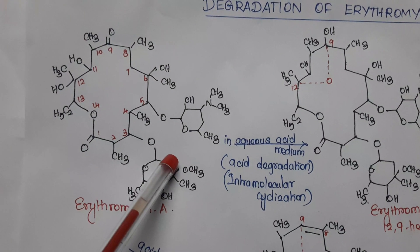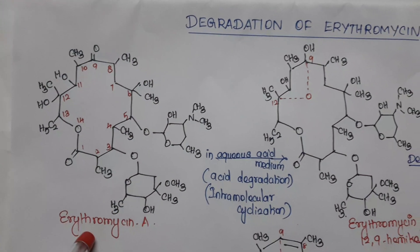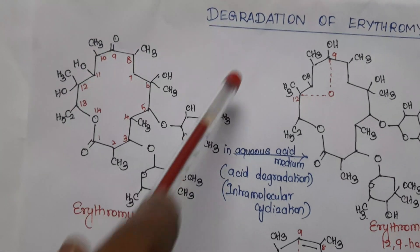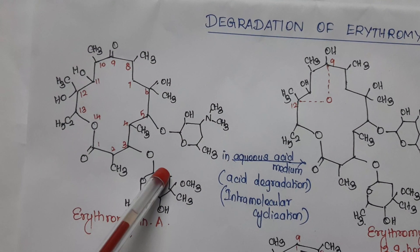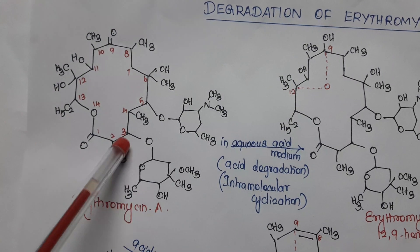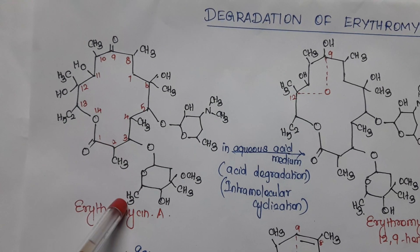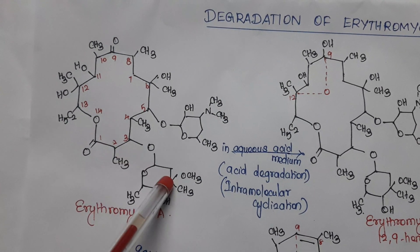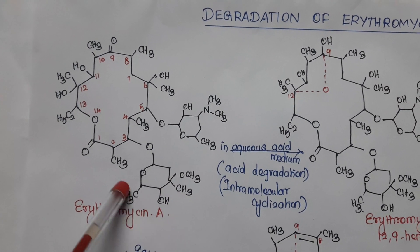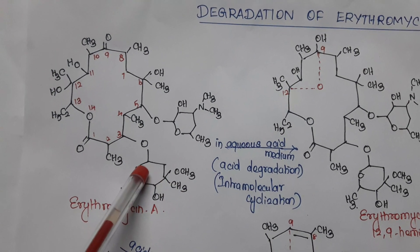Last class we have seen clinically used macrolides. This class will see the degradation of macrolides, that is the degradation of erythromycin. We have seen the main limitation of erythromycin, that is it is acid unstable. Because of that, it forms internal cyclic ketal and causes GI cramping. Now we will see how it causes internal cyclic ketal.